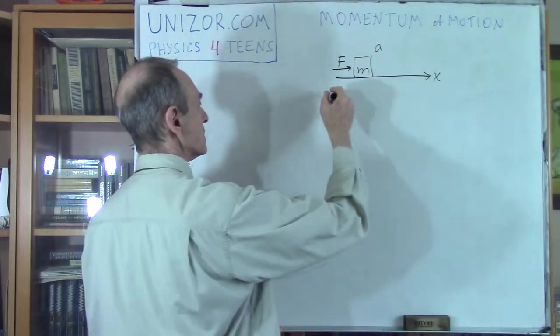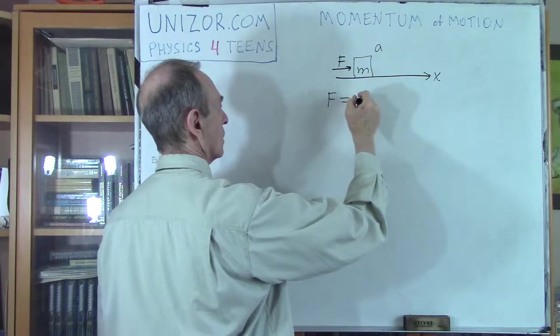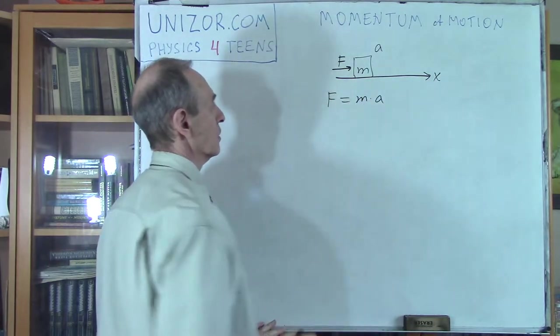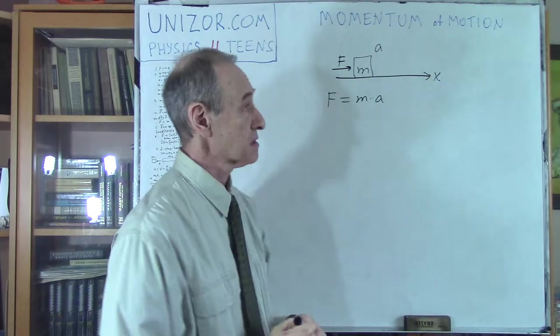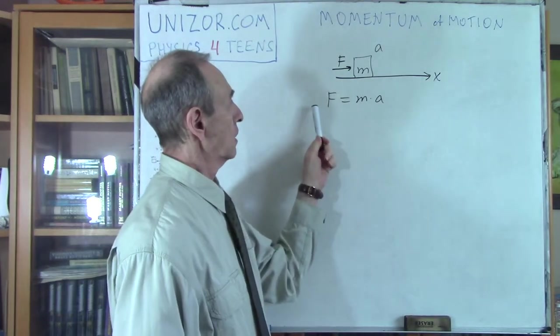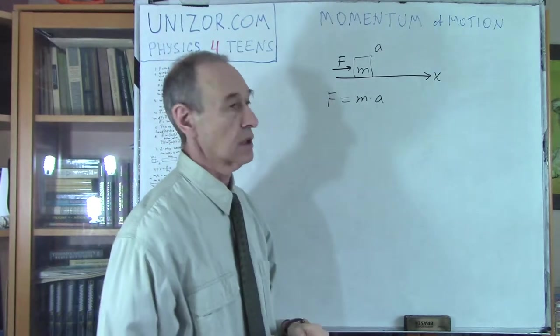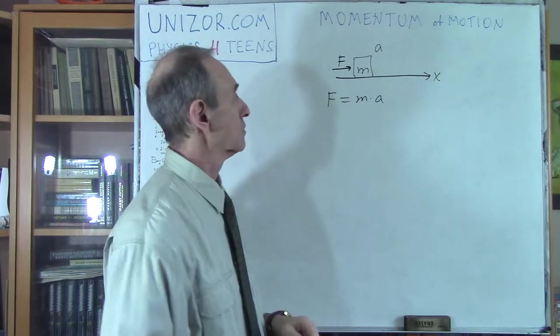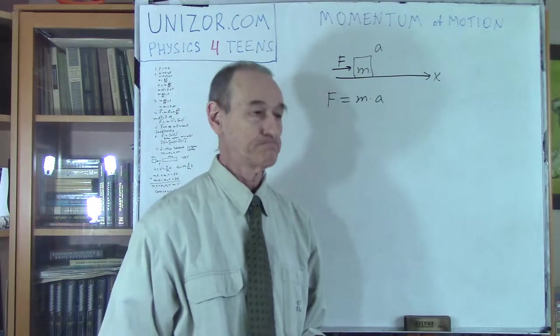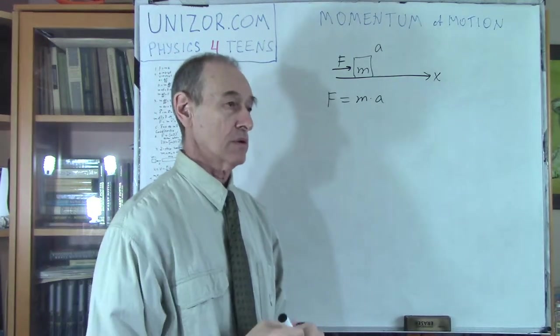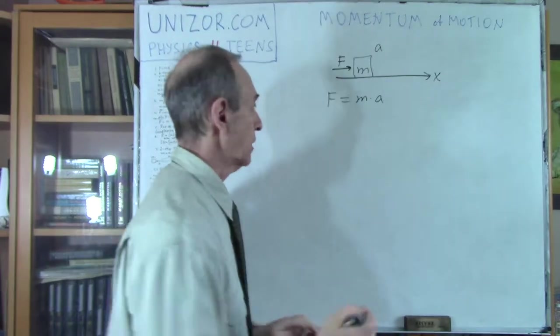Since it's a one-dimensional case, I don't really have to use vectors. A is basically a scalar. Let this be the positive direction of the x-axis. A is positive and F is also positive. We all know Newton's second law, which states F equals ma.